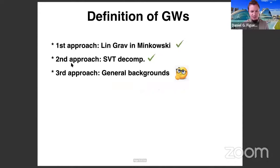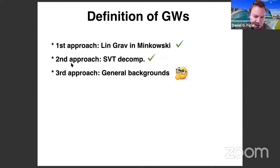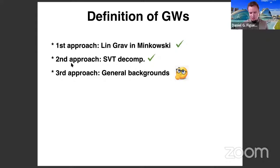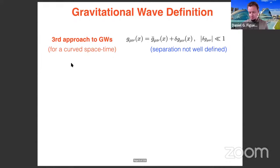From the first lecture, we studied two approaches to define gravitational waves: the first approach based on linearized gravity over Minkowski, and a more general approach based on the scalar-vector-tensor decomposition, done over Minkowski but applicable to any isotropic background. There was a third approach we didn't have time for, which we are going to deal with right now before moving on to new topics.